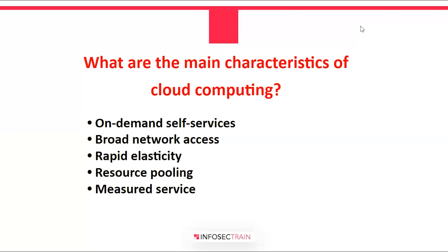Resource pooling occurs when IT resources — for example, networks, services, storage, applications — are shared in an individual manner across multiple applications and occupants. Multiple clients are served by the same physical resource. In measured services, resource utilization is tracked for each application and occupant, providing an account of what has been used to both the user and the resource provider. This is done for a variety of reasons including billing, monitoring, and resource utilization.